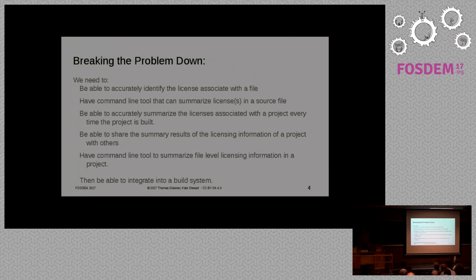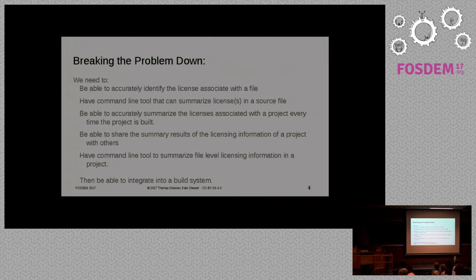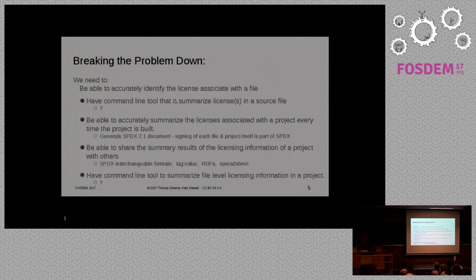We need a command-line tool to summarize the licensing in a source file. You want to be able to do grep-style operations to understand what's going on. You need to accurately summarize the license associated with every project at the time the project is built. You've got to be able to share the summary results with others, and you need a command-line tool that can summarize file-level licensing — is it a single license, are there multiple licenses? For this to be effective over time, it's got to be in CI loops and build environments so you can keep up as it goes along.